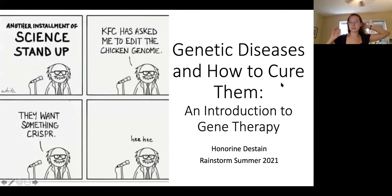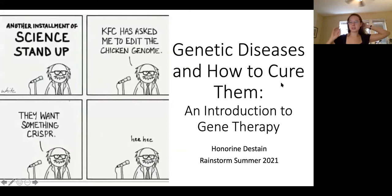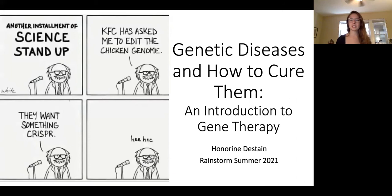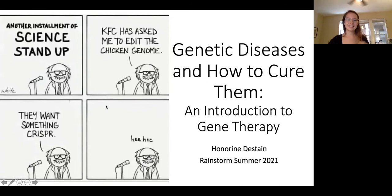The official title is 'Genetic Diseases and How to Cure Them' — a twist on 'Fantastic Beasts and How to Find Them.' It's really an introduction to gene therapy: a brief history of how we've tried to use it in the past and how we could use it in the future. We'll talk about CRISPR at the end, but there are actually quite a few things in gene therapy that have arisen historically outside of CRISPR.